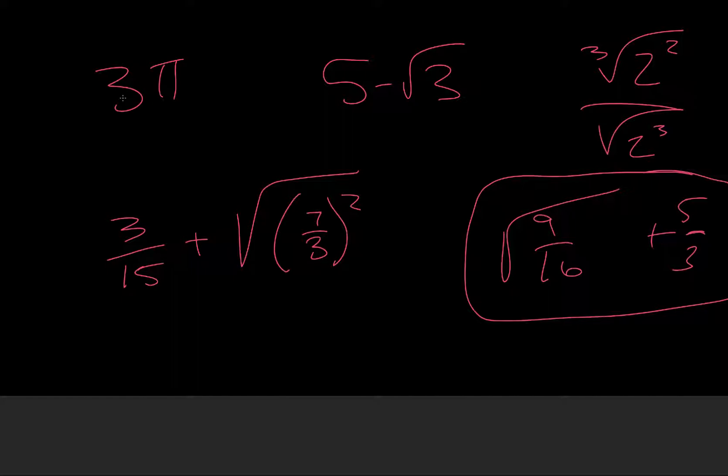So if we have a rational number, and we multiply it by an irrational number, and we don't have 0 involved, we get an irrational number. So 3 times pi would still be an irrational number.